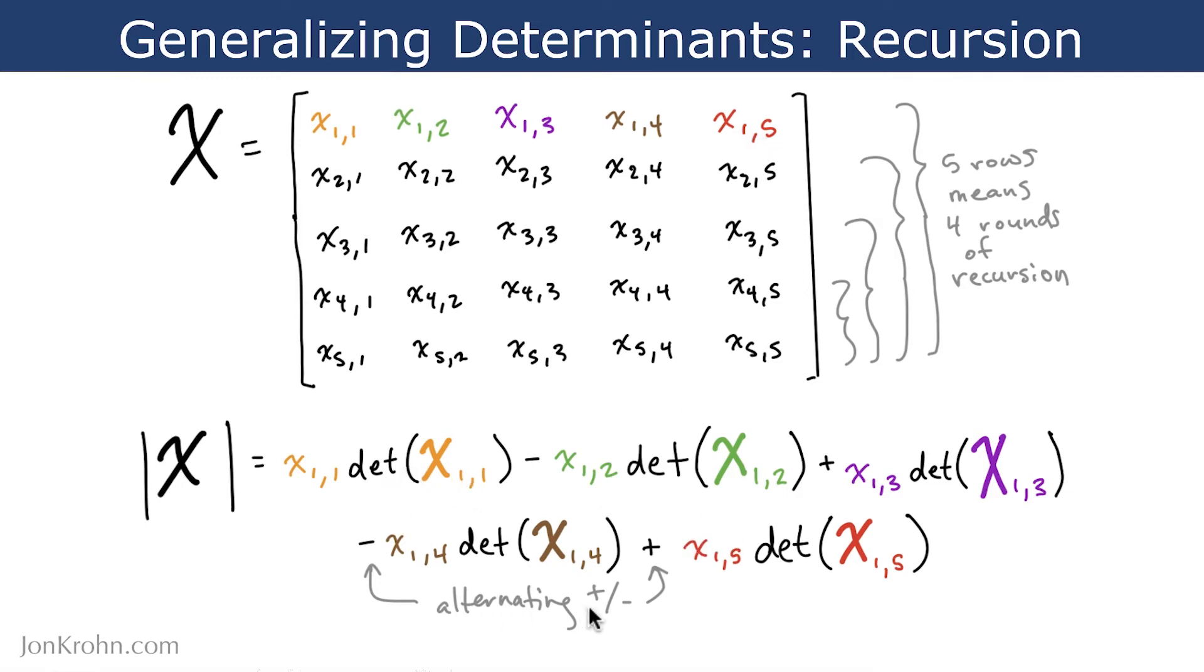Notice here that we alternate plus and minus signs. So we start off with a minus, with a subtraction, and then the next term is added, then we subtract again, and then we add again, and so on.